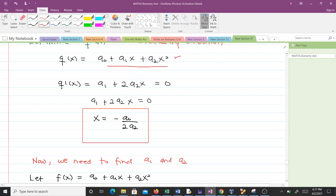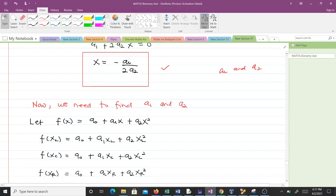Now we need to find a₁ and a₂ so that we can make substitution into this relation. We had q(x) = a₀ + a₁x + a₂x², but note that q(x) = f(x). So f(x) can also be written as a₀ + a₁x + a₂x².